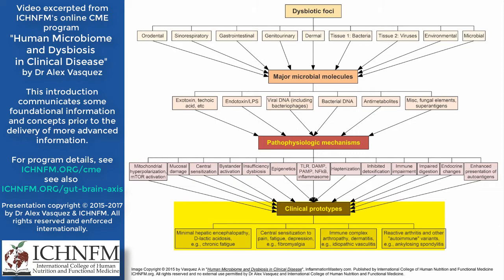I've divided those patterns into specific clinical prototypes. These include dysbiotic encephalopathy, central sensitization to pain, fatigue, and depression — a good example of which is fibromyalgia — as well as immune complex arthritis, dermatitis, and vasculitis. Of course one of the prototypes we're all familiar with is reactive arthritis and its autoimmune variants, such as ankylosing spondylitis and rheumatoid arthritis.